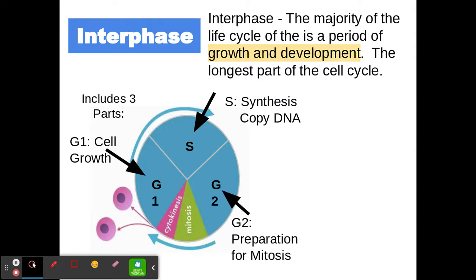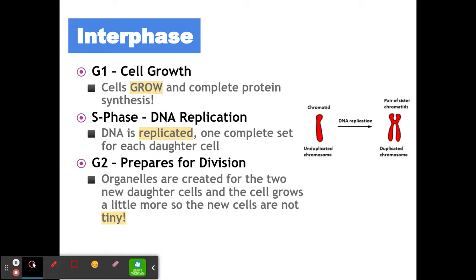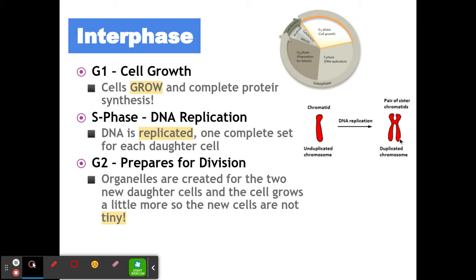G1 is cell growth — the cell grows and completes protein synthesis. Next is the S phase, where DNA is replicated. The single chromosomes become Xs, those duplicated or replicated chromosomes. This is important so we can pull them apart and each cell will have a complete set of DNA, giving each daughter cell the right amount.